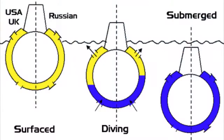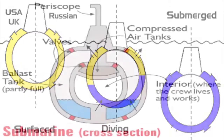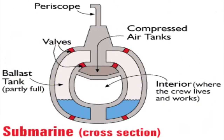Depending what depth they wish to dive, sailors simply adjust the ratio of air and water in their tanks, and when ready to resurface, they blow compressed air into the tanks, forcing the seawater out, lowering the density, and thus causing them to rise back to the surface.